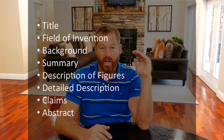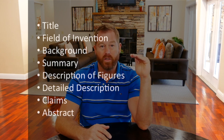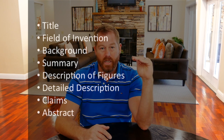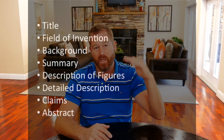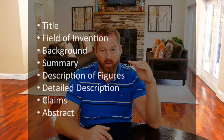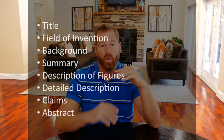We're going to set out the headings for your application. The headings are in this order: it starts with the title, the next will be the field — so field of endeavor, the area that the invention occurs in. Then the background, which covers the state of the art up to the point of the invention — describing where the invention fits in and how it improves on what was already out there.